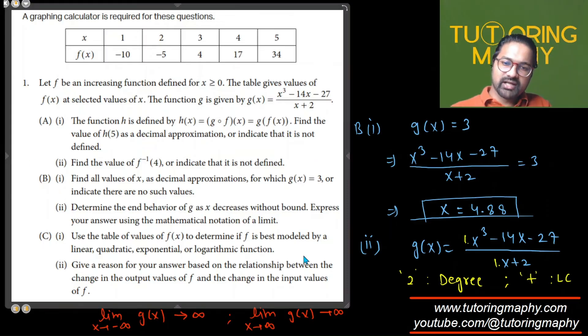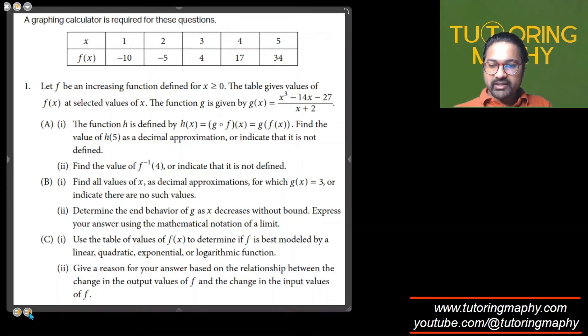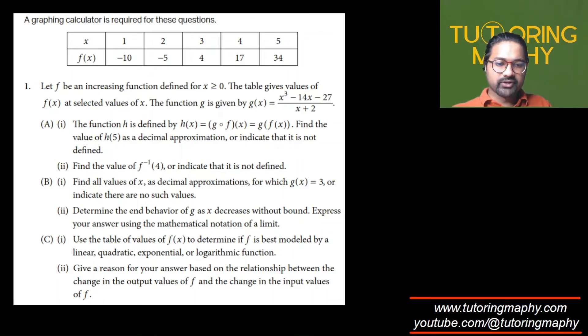Use the table of values of f(x) to determine if f is best modeled by a linear, quadratic, exponential, or logarithmic function. Let's see the pattern. For every one-unit increase in x, notice how the function is changing. There's a 5-unit increase, then a 9-unit increase, then 13, then 17, and so on.